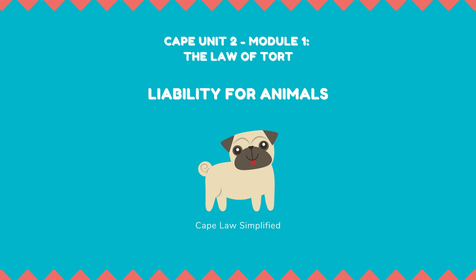Strict liability at common law in relation to the tort of cattle trespass has been amended by statute in most West Indian countries, but not in Trinidad and Tobago. The result now is that only where the cattle trespass has been committed by a bull, cow, ox, heifer, or calf, and it was committed to a small parcel of cultivated land or pasture, is there strict liability. Therefore, if goats or sheep damage another person's garden, the claimant does not have the advantage of strict liability in cattle trespass but will have to show negligence.